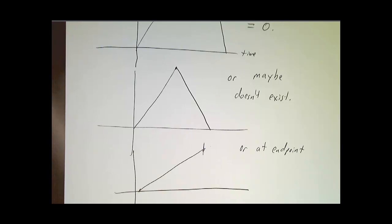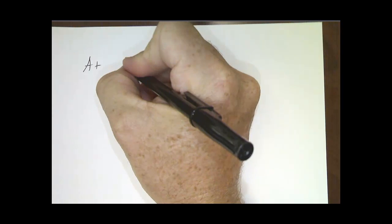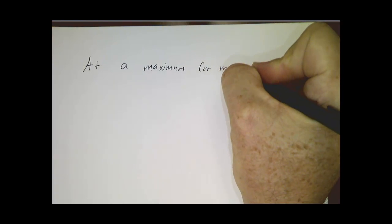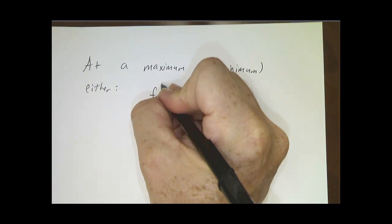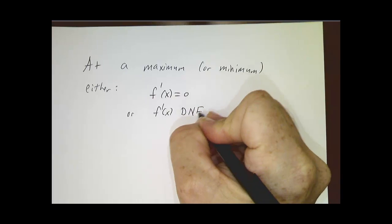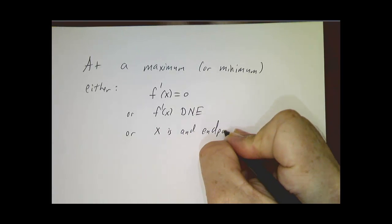But that's not really what we're talking about for the top of the arc. Most of the time we're talking about smooth things where the derivative exists, and we're looking over the whole interval. So let's write that down: at a maximum or a minimum — the same thing would apply to the bottom of the arc — either the derivative is 0, or the derivative does not exist, or you're at an end point.